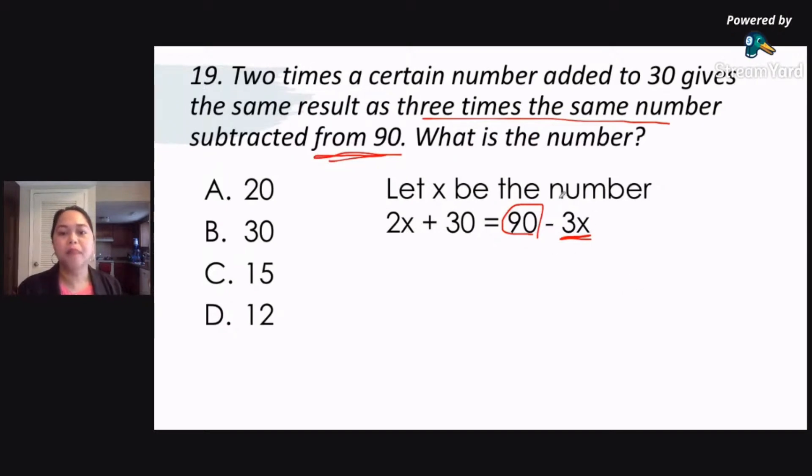So if you have this, make sure that you combine like terms. All of the x's, move them to the left side. All without x, move them to the right side. Now remember that once you transfer the number to the other side, the sign also changes. So negative 3x here becomes positive 3x. That's why we have 2x plus 3x. Your plus 30, when you move it to the other side, becomes minus 30. So 90 minus 30. So 2x plus 3x equals 90 minus 30.